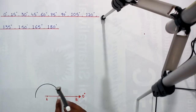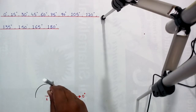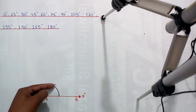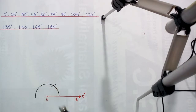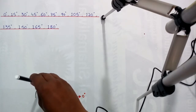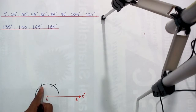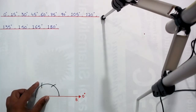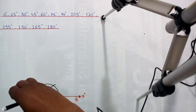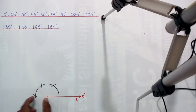Now place the needle of the compass on this point and draw another arc. If we join point A with this point and draw a line, this will represent a 60 degree angle. Put the needle on the next point and draw another arc. Since 60 plus 60 plus 60 equals 180 degrees, continuing this gives a total of 180 degrees.